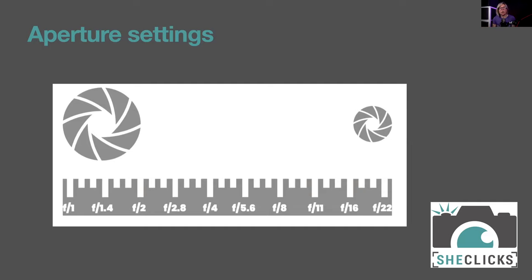Moving from f/1 to f/1.4 to f/2 is moving in whole stops, and each step halves the amount of light as you go from a large to a small aperture. Staring at the numbers cold they don't make immediate sense, but once you understand the fraction involved it becomes more logical. The theme is the same as ISO and shutter speed — halving and doubling. A lens set to f/2.8 lets in lots of light; closing to f/16 or f/22 lets in much less.